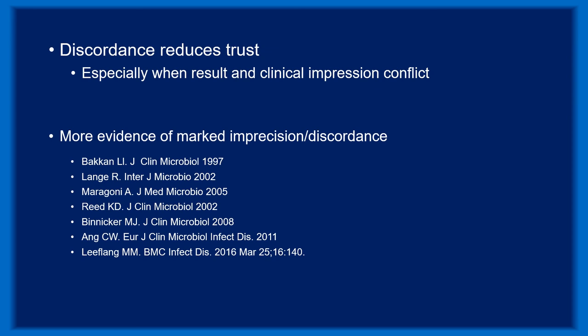The issue of imprecise or discordant results is significant because it reduces trust in all of the results — positive and negative — generated by the test. Imagine what would happen if INR results or glucose monitoring had this same degree of imprecision. It would be nearly impossible to confidently manage patients knowing that decisions were based on data that could easily be wrong.